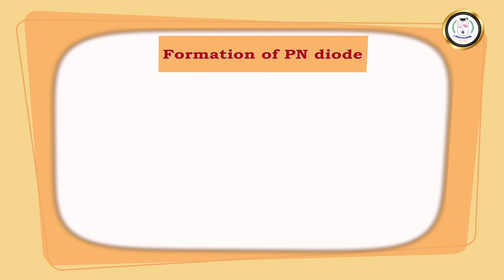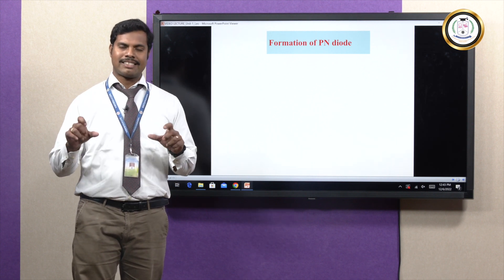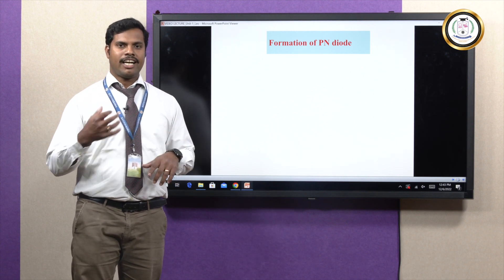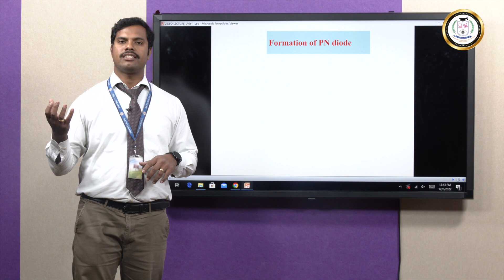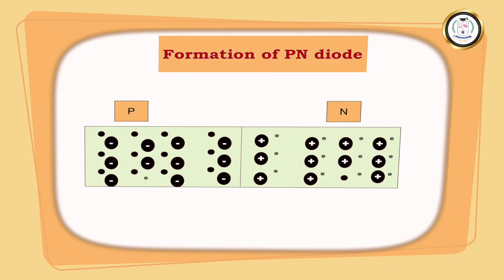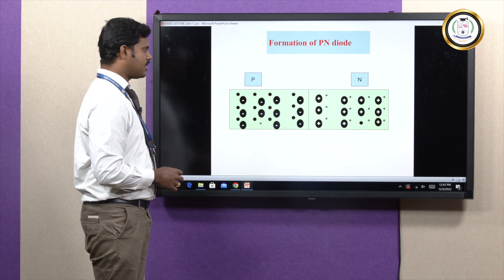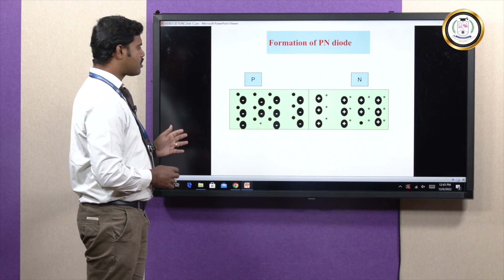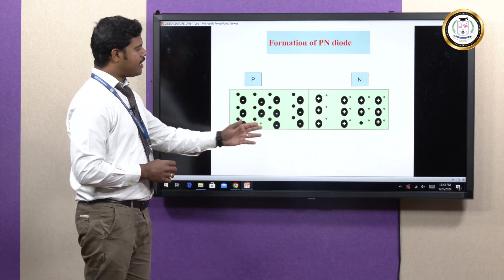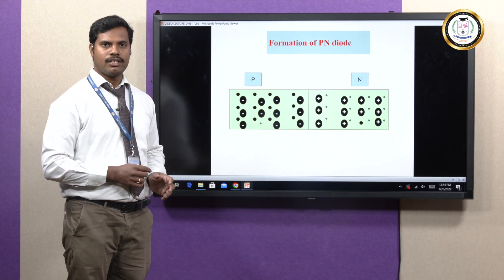Now we are going to see how a P-N junction is formed. For forming the P-N junction diode, a single crystalline structure is taken. One side is doped with P-type impurities and the other side is doped with N-type impurities. In P-type material, majority carriers are holes and minority carriers are electrons. In N-type material, majority carriers are electrons and minority carriers are holes.